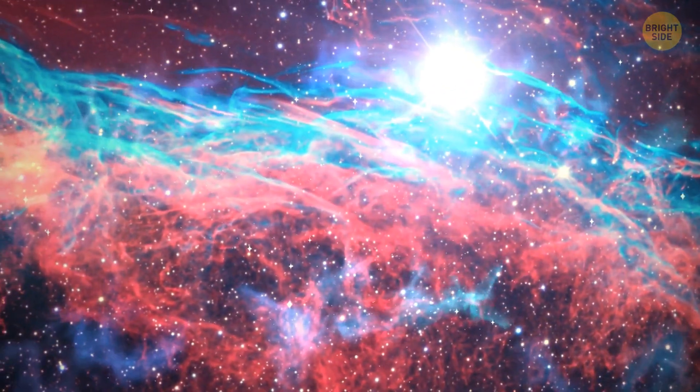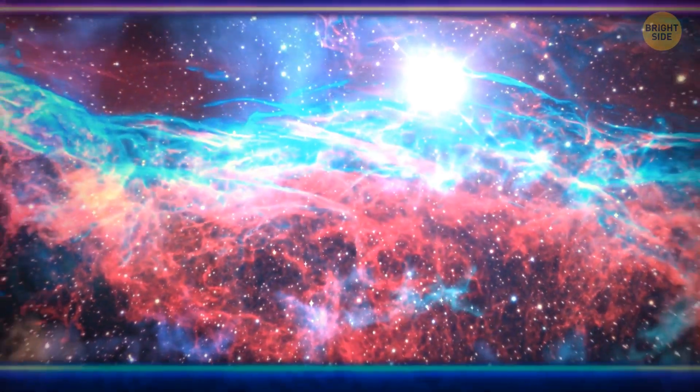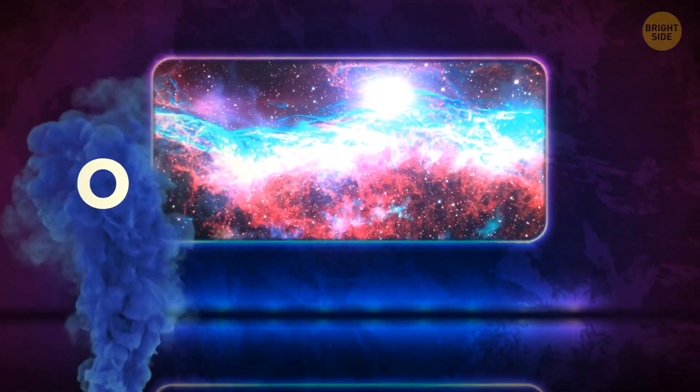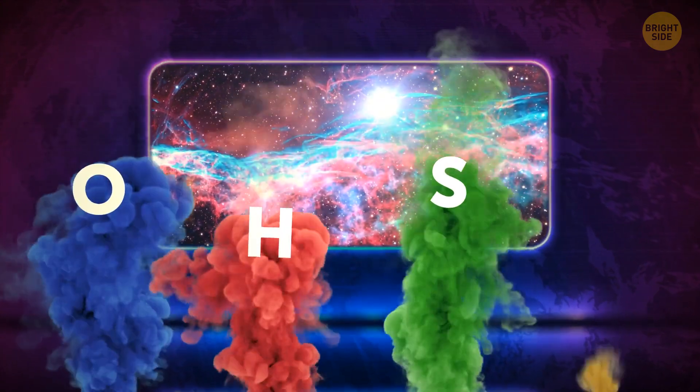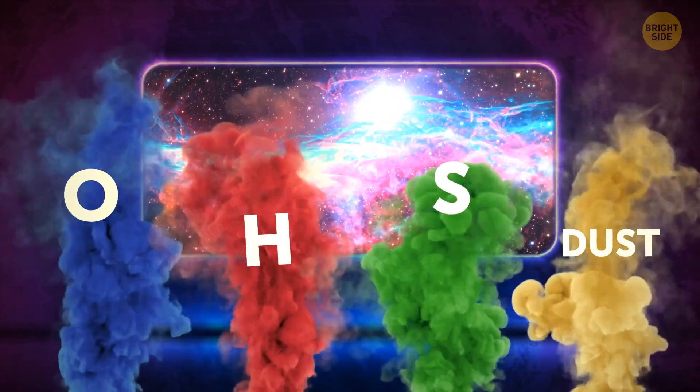Oxygen, hydrogen, and sulfur glow in ionized states like a fluorescent light bulb. Oxygen blue, hydrogen red, some green and sulfur, and dust glow as yellow-orange.